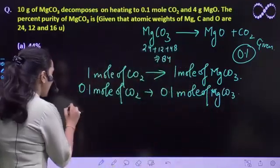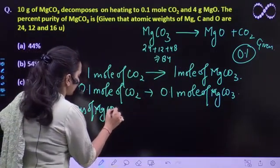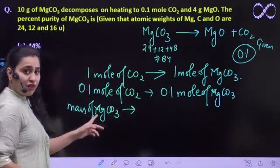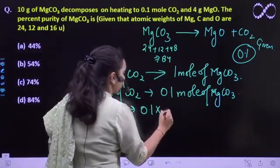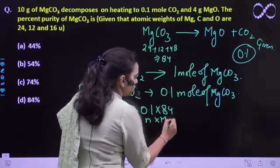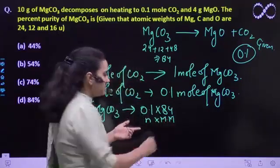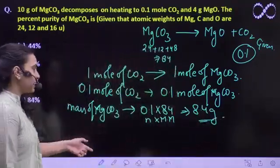So mass of MgCO3 that decomposed, that is reacting, that is 0.1 into 84, this is moles into molar mass, which is 8.4 gram that is reacting.